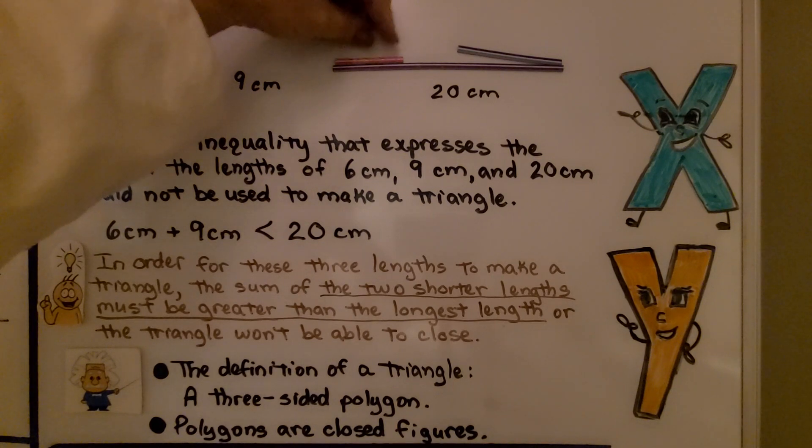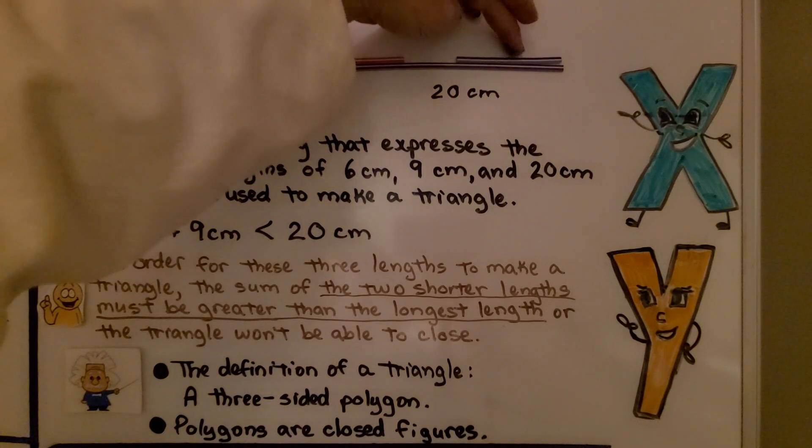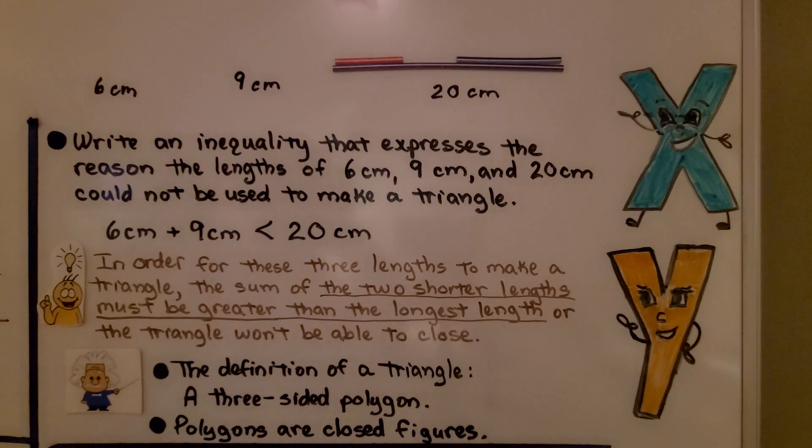We could even try laying it down and see there's no way that they can meet. They can't reach to make a closed figure to make a triangle.